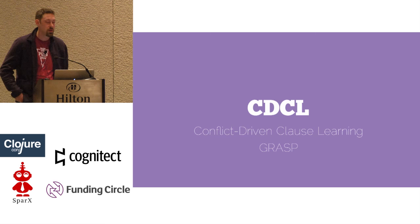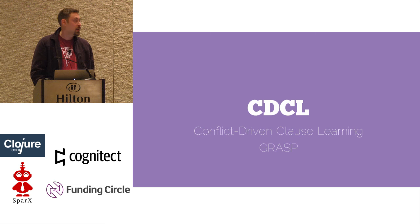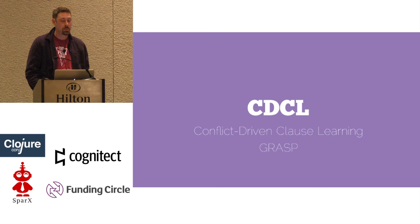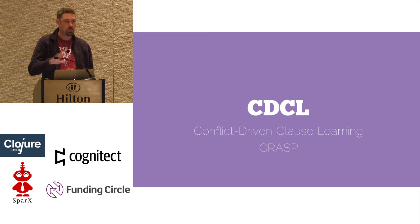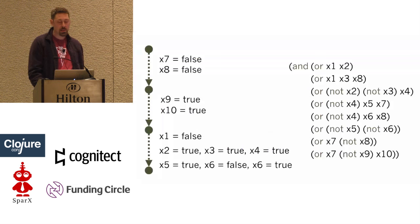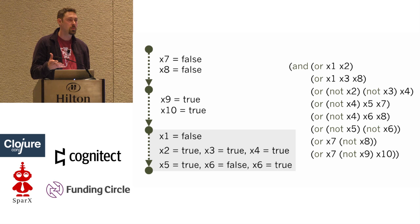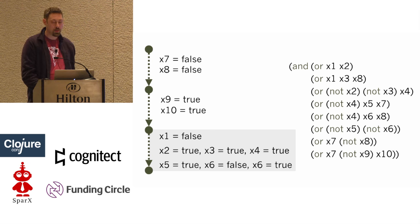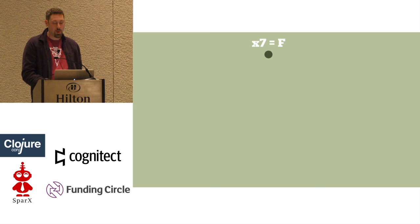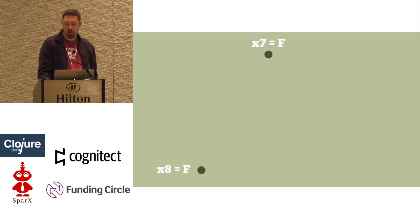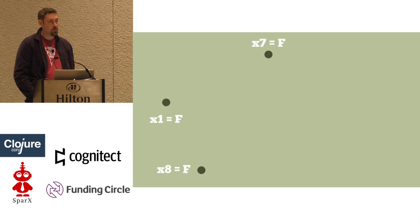Now for the main algorithmic event: CDCL solvers — conflict-driven clause learning. This was introduced by a solver called Grasp around the same time. This is so important that you'll hear solvers called CDCL SAT solvers — it's a whole genre. The main insight is that when we run into a conflict, we can analyze it to learn new information that helps us solve the problem faster. To do that, we use something called an implication graph. From decision level one, X7 was false and we learned X8 was also false. On decision level three we decided X1 was false, and that led to our chain reaction.